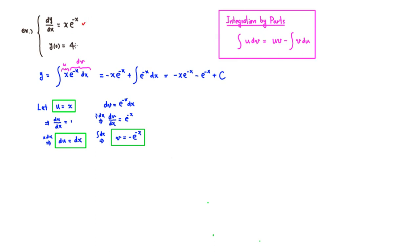So let's use the initial value condition. We plug in y at x equals 0. If you put 0 in the first term it's 0. The second term gives negative e to the 0, which is negative 1. Plus c. This is supposed to equal 4 according to the initial value condition. So we can find c by adding 1 to both sides: c is equal to 5.